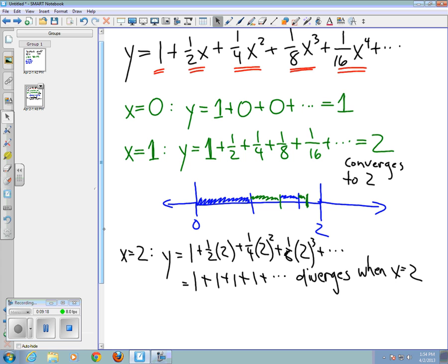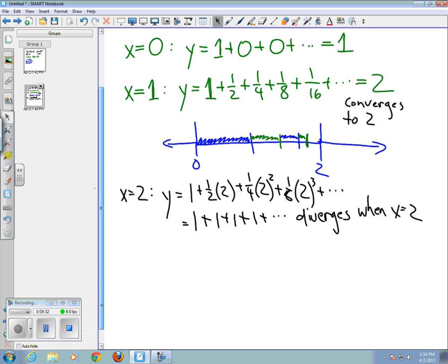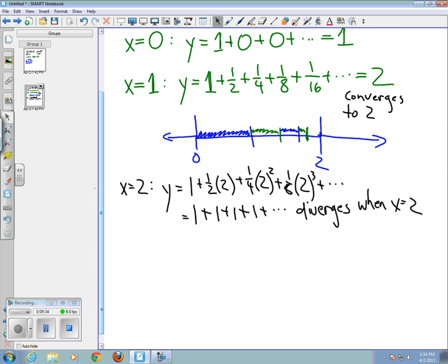And of course it converges to one when x was zero. So this function looks like it's okay when x is zero or one, but when x is two it is not okay. What we would find if we tried a couple other values is that if x was negative two, let's try that.